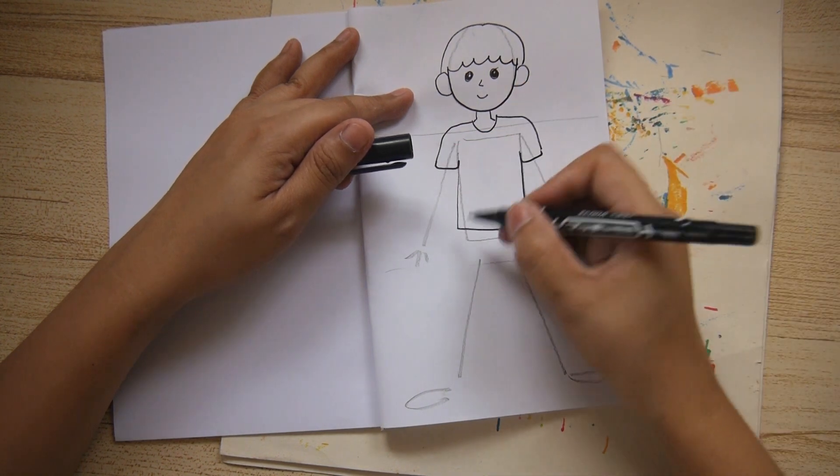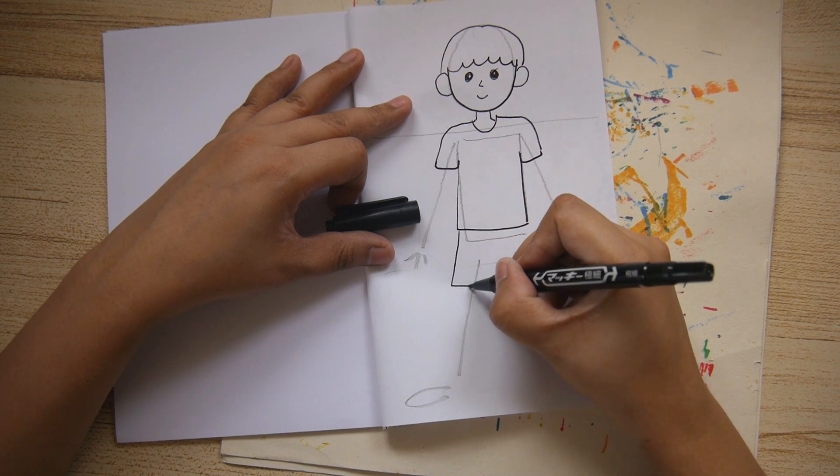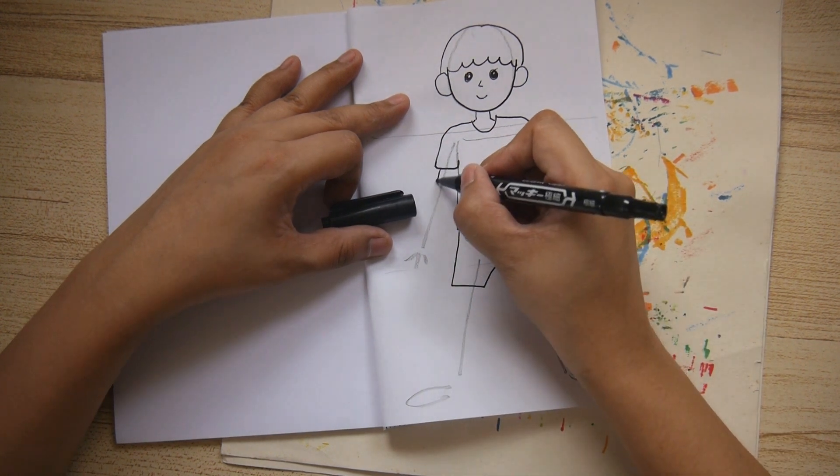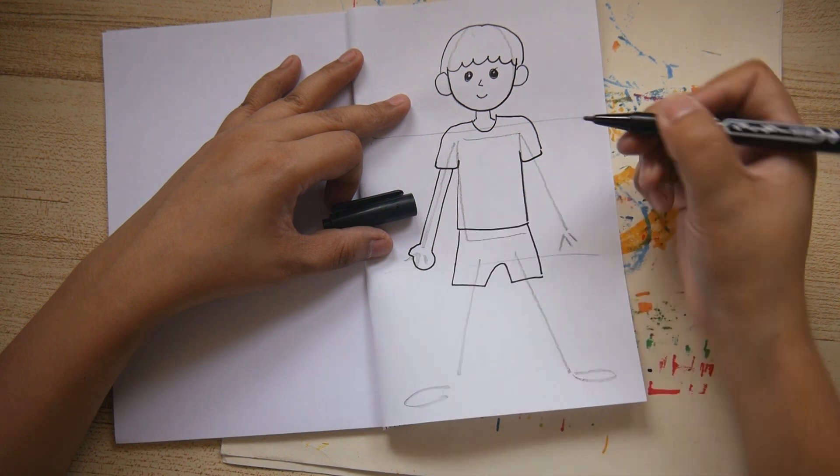And next, I'm going to draw the shorts. Now, to draw the arms, just draw two sloping lines and then connect them with the hand.